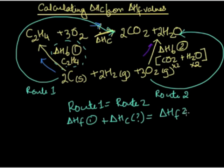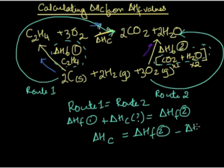...enthalpy change of formation which includes enthalpy change of formation for CO2 and water. Now if we rearrange our equation, we get delta Hc equals delta HF2 minus delta HF1.